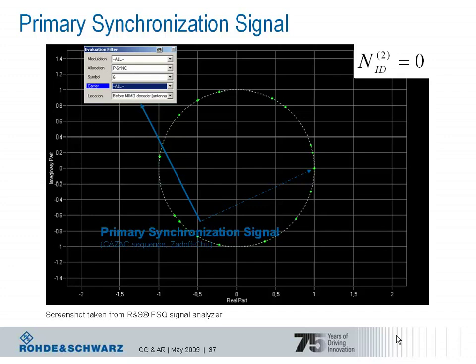For the three different physical layer identities, three different sets of two sequences have been selected which show the best behavior. The one displayed in the constellation diagram is the sequence for identity number 0. Match filtering works by correlating the received signal with the possible sequences for the primary synchronization signal — not on the received analog RF signal, but in the digital domain.